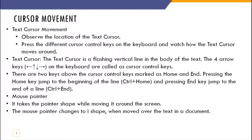You can also use the mouse pointer — click anywhere on the document and the flashing cursor will move there. The mouse pointer changes to an I-beam shape when it is over the document. When you are outside the document area you get an arrow, but inside the document you have both the flashing cursor and the I-beam mouse pointer.